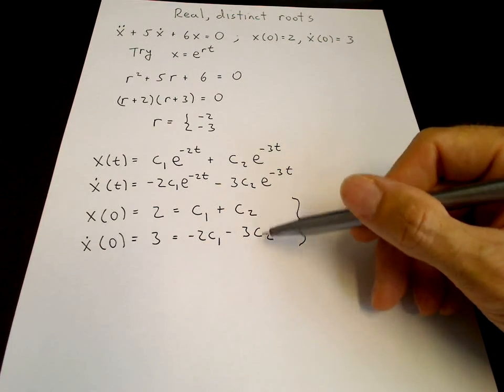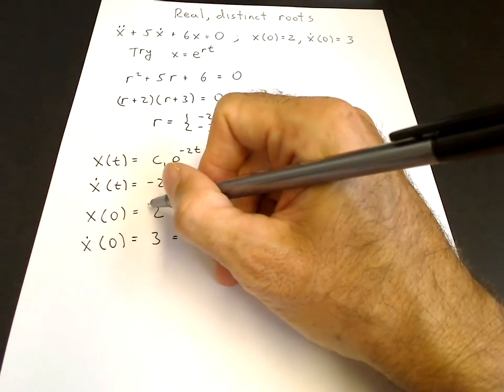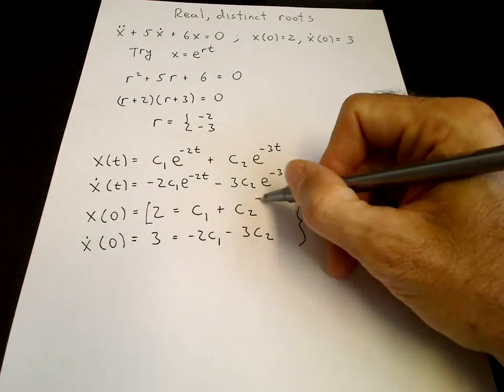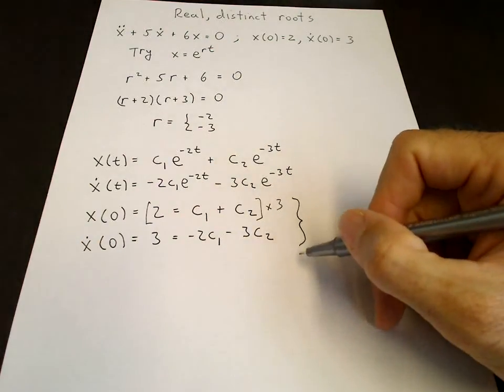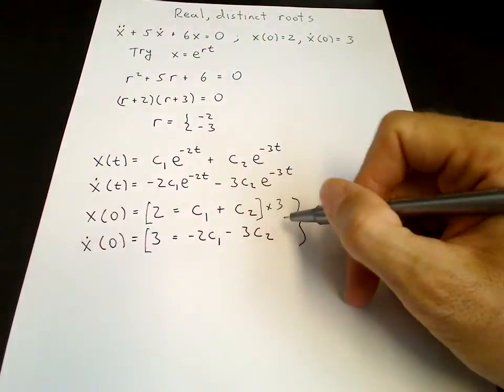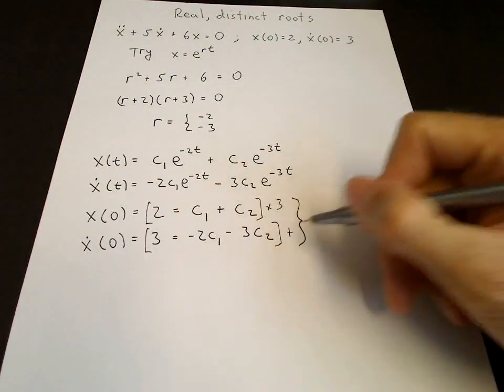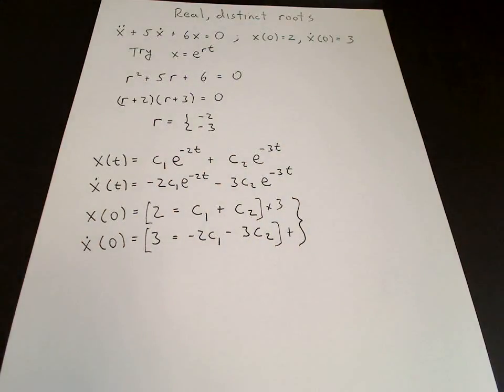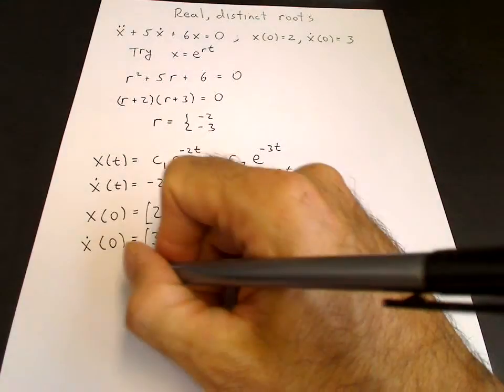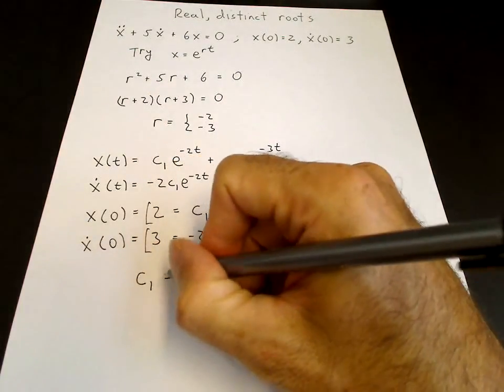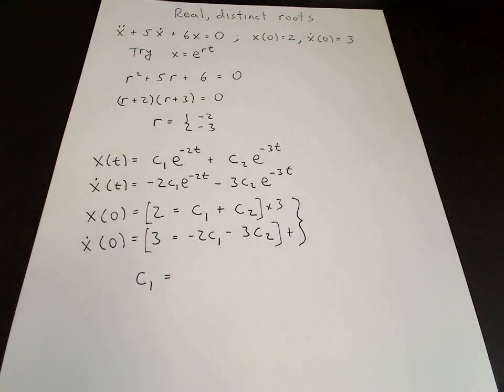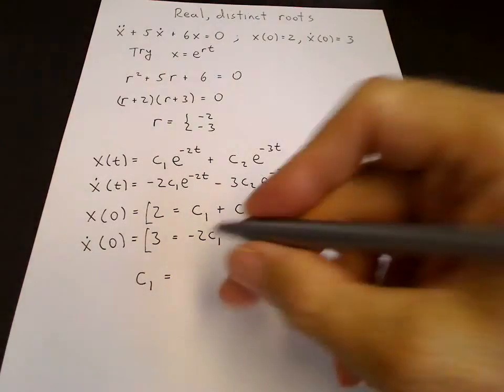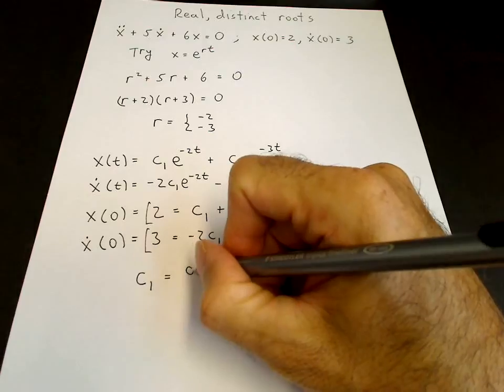I would multiply the first equation by 3 and add it to the second equation, so the c₂ cancels. We get 3c₁ plus -2c₁, which is c₁. So that enables us to solve for c₁, which is 3 times 2 plus 3, which is 6 plus 3, which is 9.